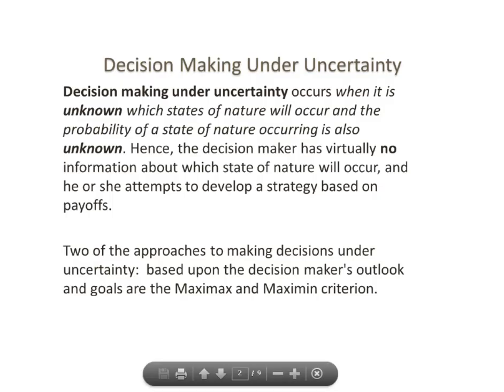When we talk about decision making under uncertainty, this situation occurs when it's unknown which state of nature is going to occur in the future, and we've also been unable to assign a probability to any particular state of nature occurring. In essence, the decision maker has no information about what's going to happen in the future, and so they're going to develop a strategy based on payoffs. Two of the approaches to making decisions under these uncertain circumstances are the maxi max and maxi min approach.